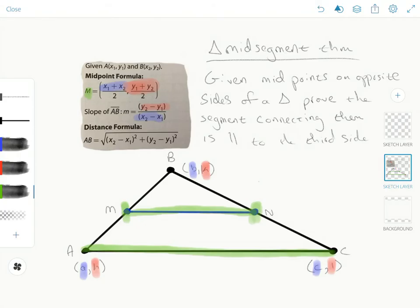So what I've highlighted here are the connections between the generic locations of the vertices, AH for A, BK for B, and CL for C, and how those are going to fit into the midpoint formula and later on the slope formula. Because in order to show that line segment MN is parallel to line segment AC, we have to show that they have the same slope.